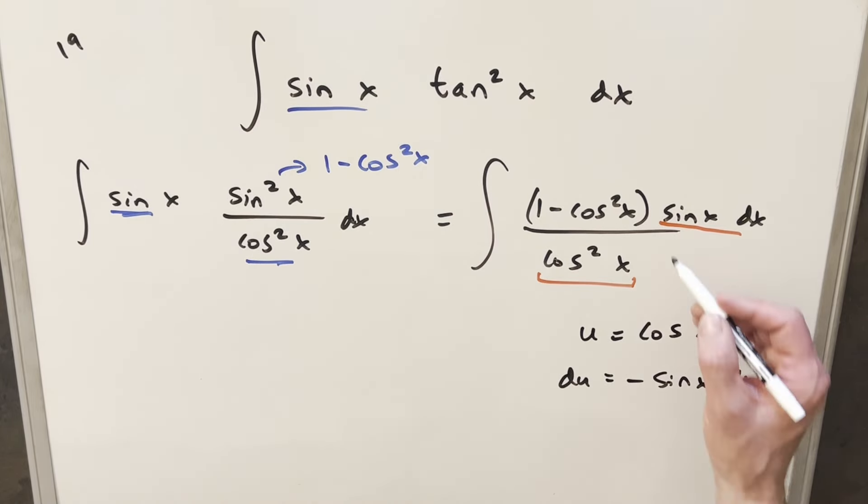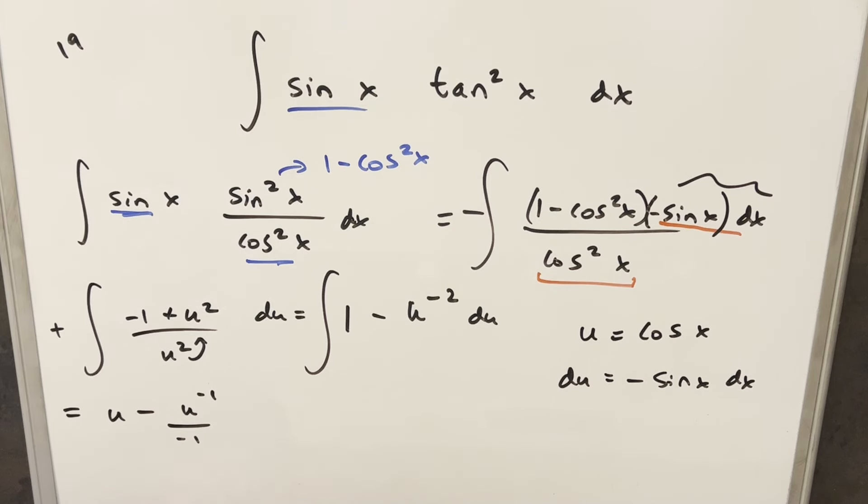And now let's go ahead with our u substitution. I just want to make my u equal to cosine, just because we're going to have the derivative over here. So when I do, we'll do u equal to cosine x, then take a derivative, du is going to be minus sine x dx.